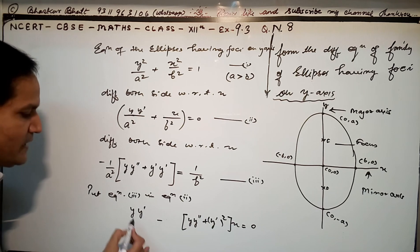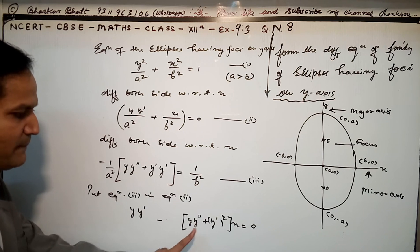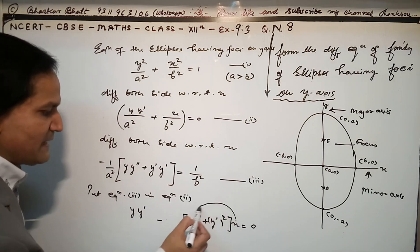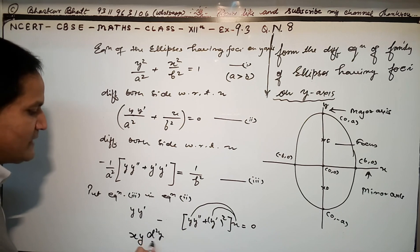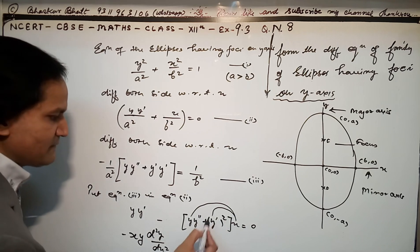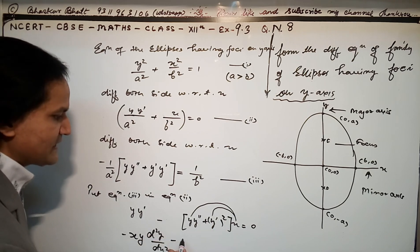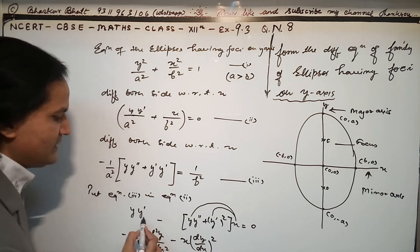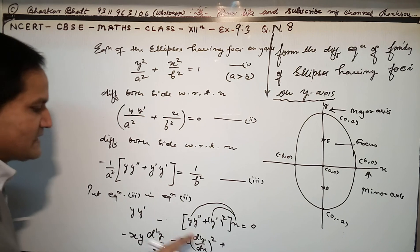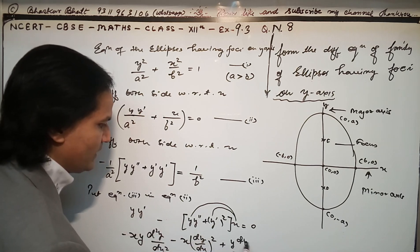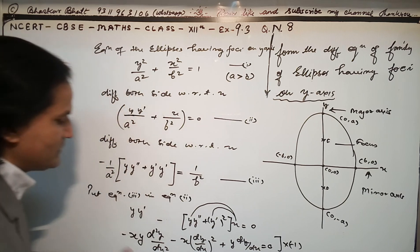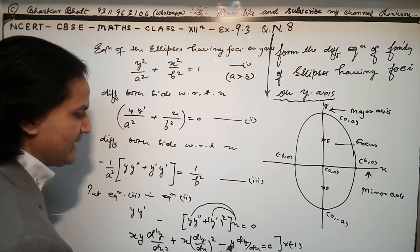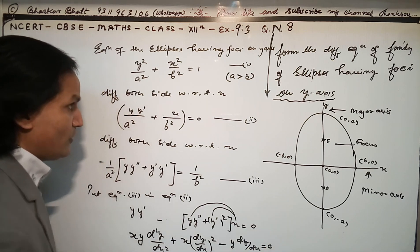Solving the expression: the largest term with x gives x·y·(d²y/dx²), then minus x·(dy/dx)², and finally y·(dy/dx) = 0. Multiplying through by minus 1 to adjust signs, the negative terms become positive and vice versa — that is the required differential equation for the family of ellipses having foci on the y-axis.